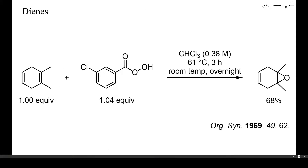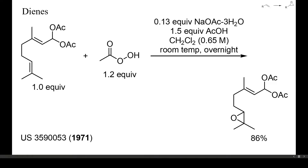Let's have a look at some specific examples. First, some representative mono-epoxidations of dienes. In this example, the Birch reduction product of ortho-xylene was oxidized with a slight excess of MCPBA. The more electron-rich tetrasubstituted alkene could be epoxidized with high selectivity — catalytic hydrogenation would have occurred at the less substituted double bond. Here, the starting diene contained two trisubstituted double bonds, one of them being slightly deactivated by two acetoxy groups. Again, a highly selective mono-epoxidation succeeded, this time with peracetic acid as oxidant.